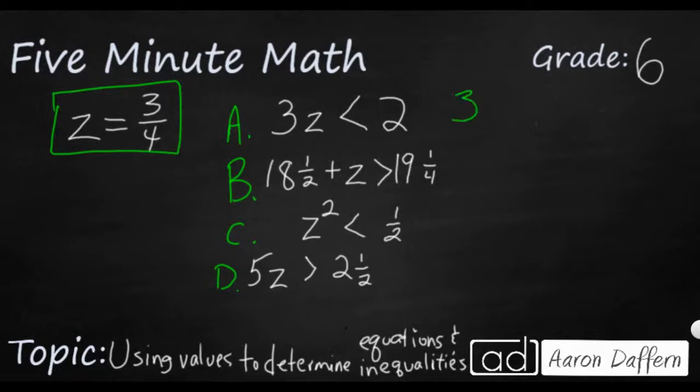So let's look at this first one. 3 times 3 quarters. Well, to make this a little bit easier, let me just write my 3 as 3 over 1. So I can multiply fractions straight across. That's going to be 9 fourths. So my 9 fourths is actually going to be 2 and 1 fourth. And if I bring my inequality back, they say that is less than 2. So it's actually greater than 2. So the inequality is incorrect.